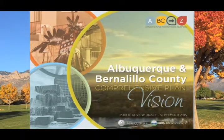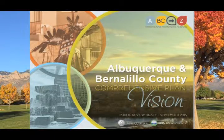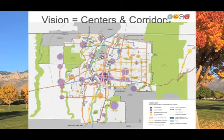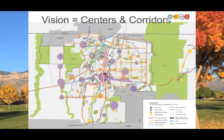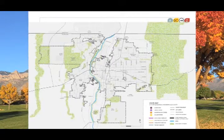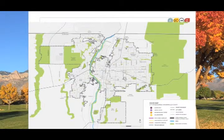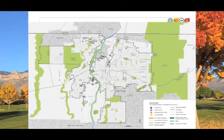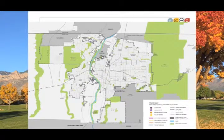In September of 2015, ABC to Z released the first draft of an updated vision for the city and county. This vision takes as its heart the centers and corridors concept first introduced to the comprehensive plan in 2003. The vision includes a map of updated centers and corridors. This map begins with a backbone system of open space in our region and subtracts out unincorporated areas that the plan does not control.